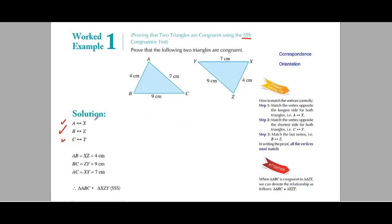This is the first step. Whenever you are solving a question on congruent triangles, you should first match each corner of both the triangles. Once you have done that, the next step follows — B matches with Z.